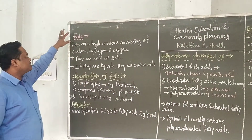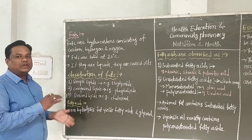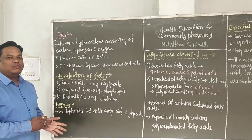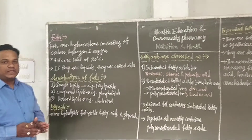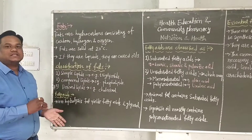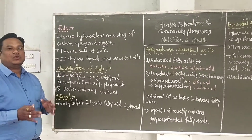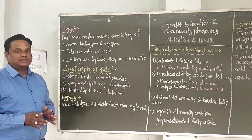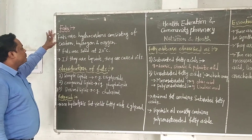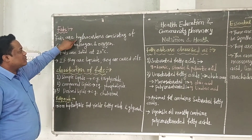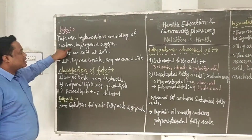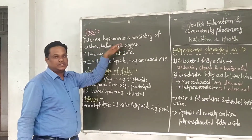What are fats? The fats are nitrogen-containing oils which are present in animal bodies mostly. The sources of fats are animals and vegetable oils. The fats are hydrocarbons consisting of carbon, hydrogen and oxygen.